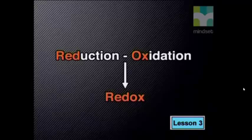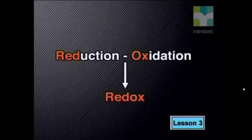Oxidation cannot take place alone, and neither can reduction. For a reaction to occur, the processes of oxidation and reduction must work together. Oxidation is half of the process and reduction is the other half. For this reason, we call these processes half reactions. By adding the half reactions together, we complete a whole reaction consisting of reduction and oxidation — that's quite a mouthful, so we shorten the name to redox.